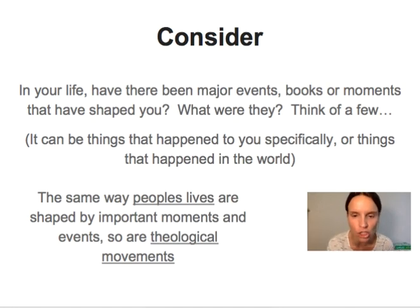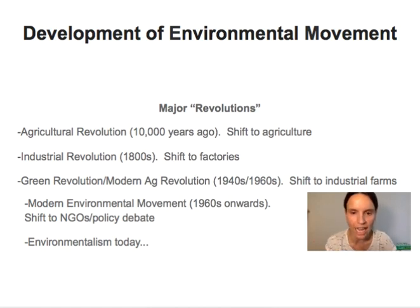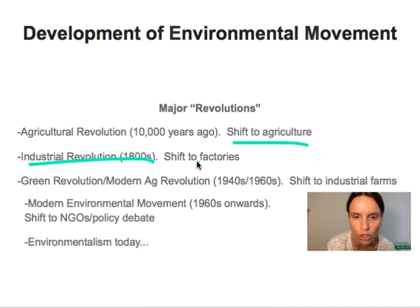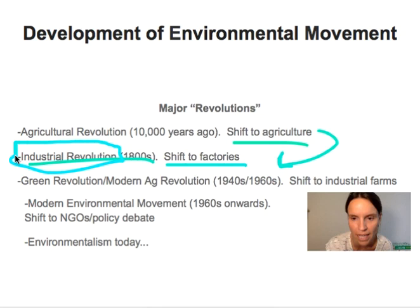When we talk about the history of the environmental movement, we are going to talk first about some of the major things that have happened that have taken the environmental movement to where it is today. The first was the Agricultural Revolution, when human societies shifted from hunter-gatherer cultures to agriculture. It really shaped the way that we live in the world and prepared us for the Industrial Revolution, when people shifted from agriculture into factory work.